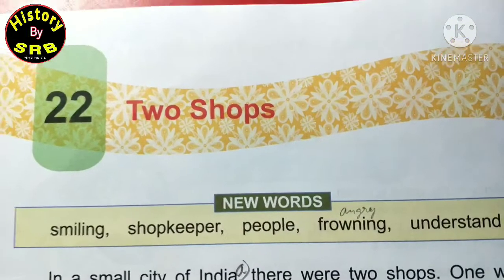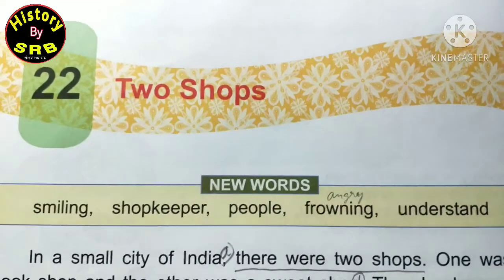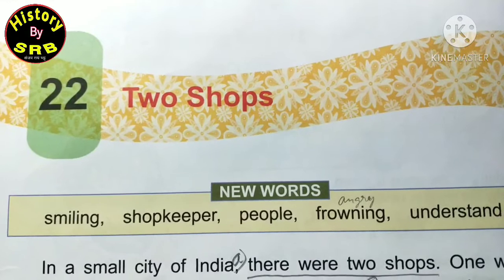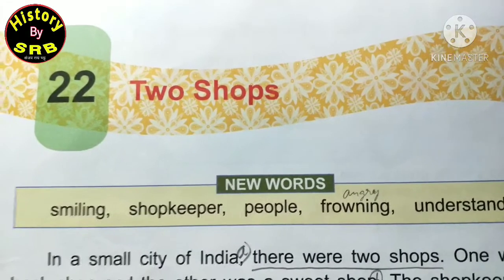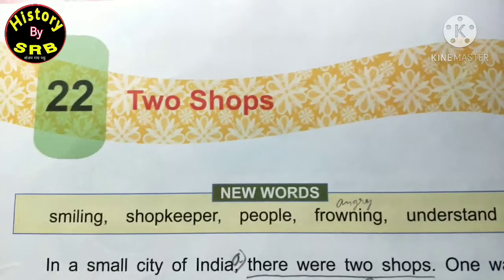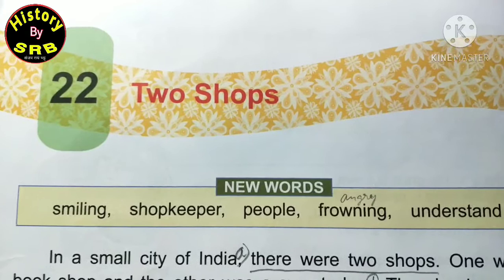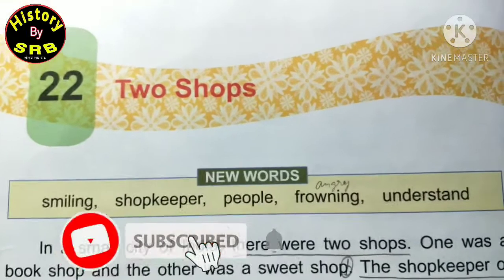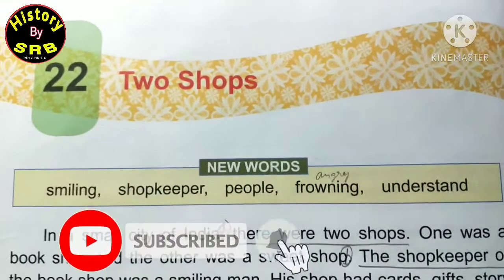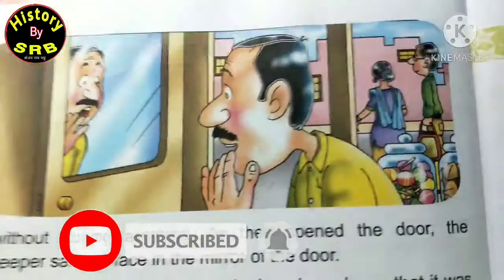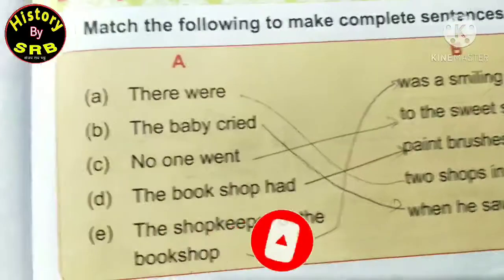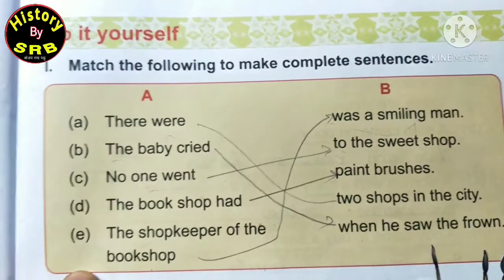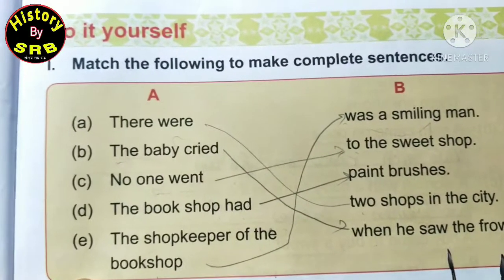Hello dear students, how are you? In this video we are going to solve the exercise questions of chapter number 22, and the name of the chapter is 'Two Shops'. So aaj hum log exercise questions solve karenge.